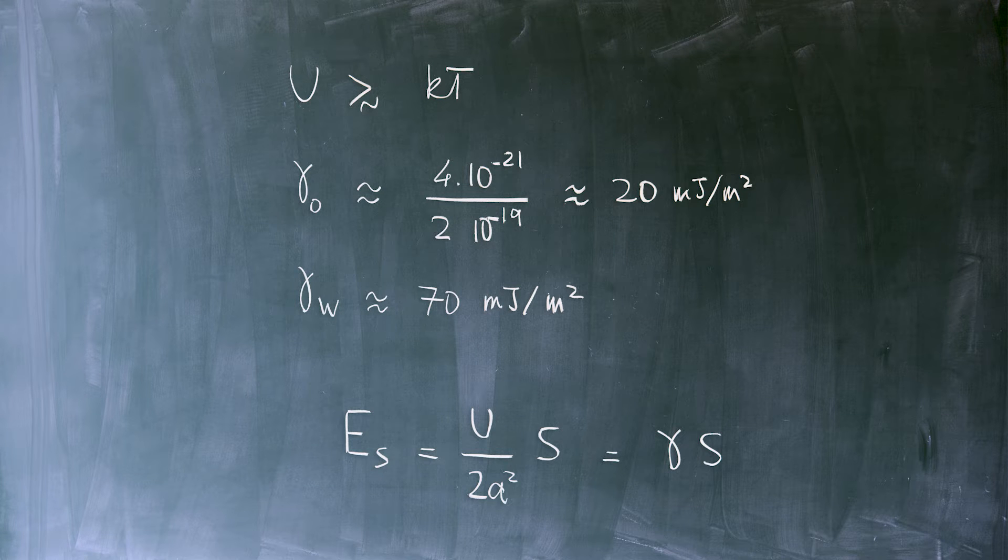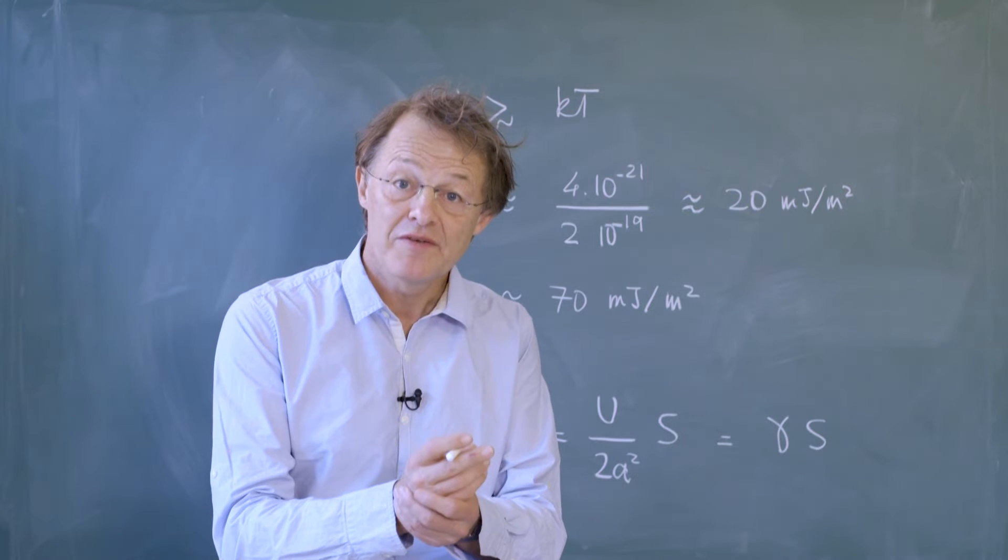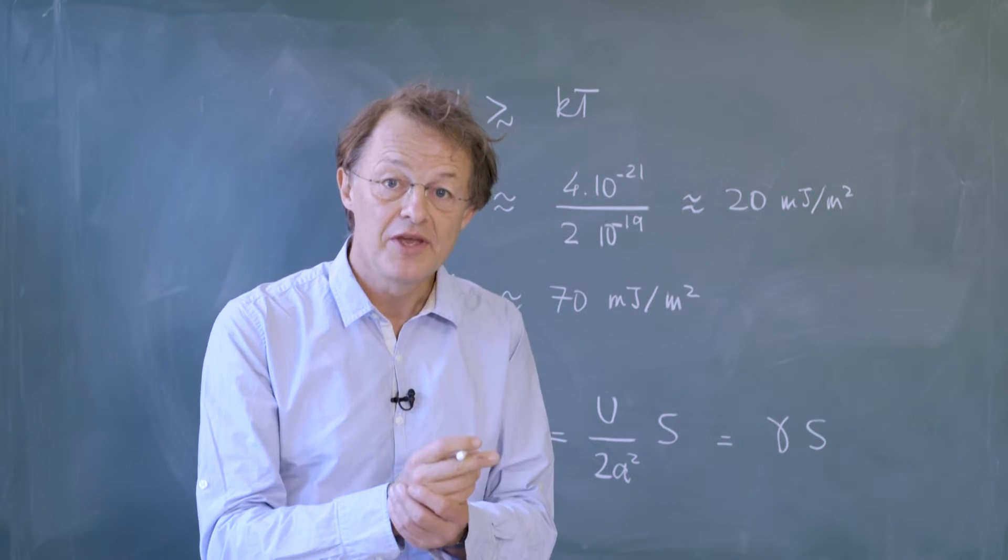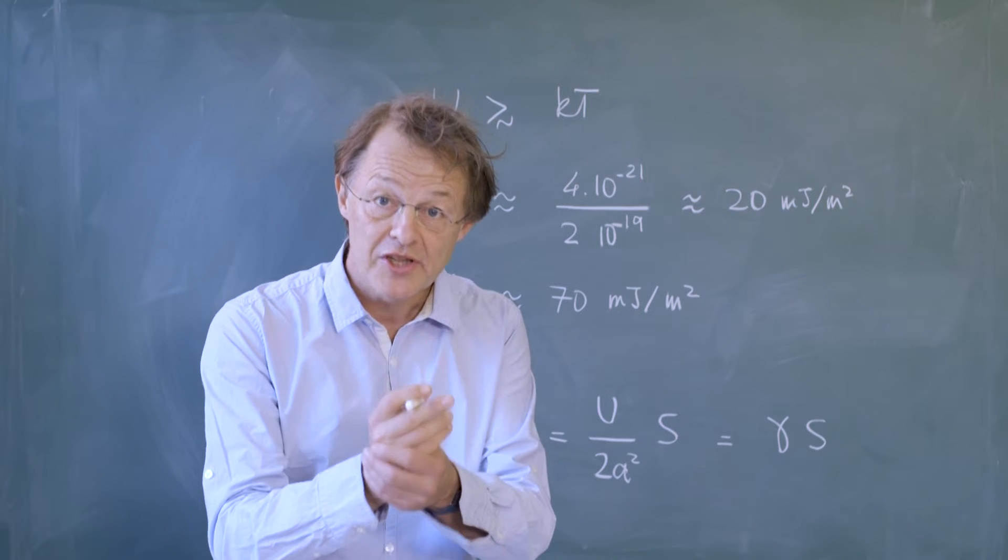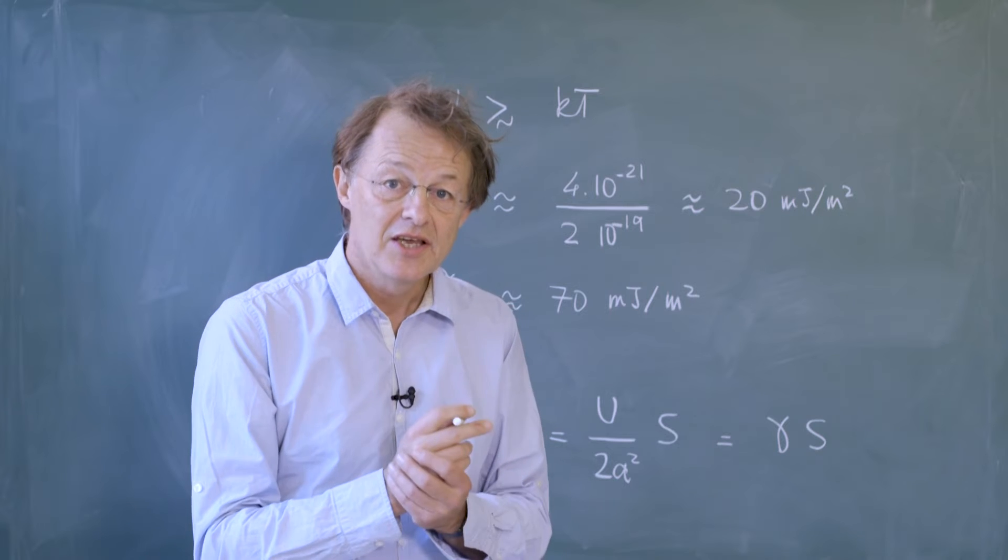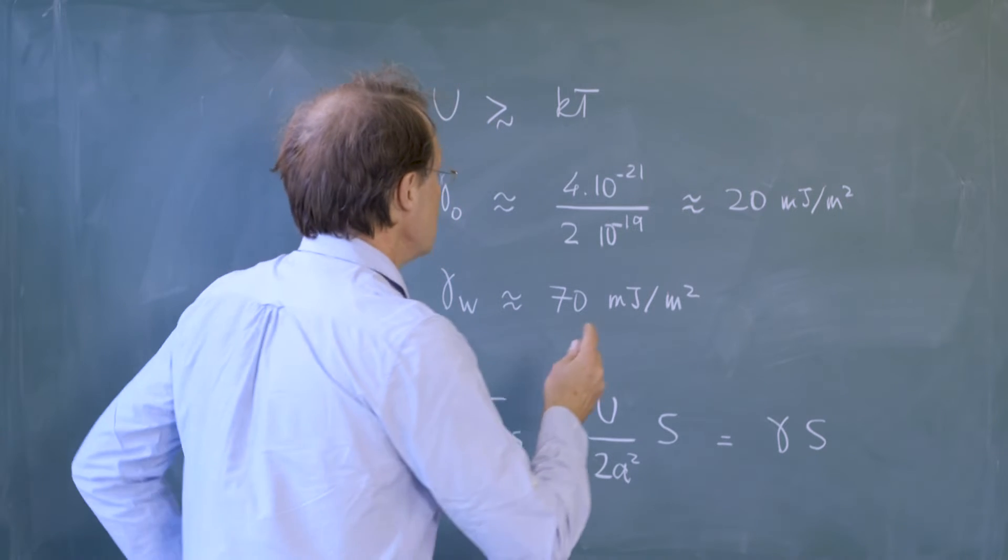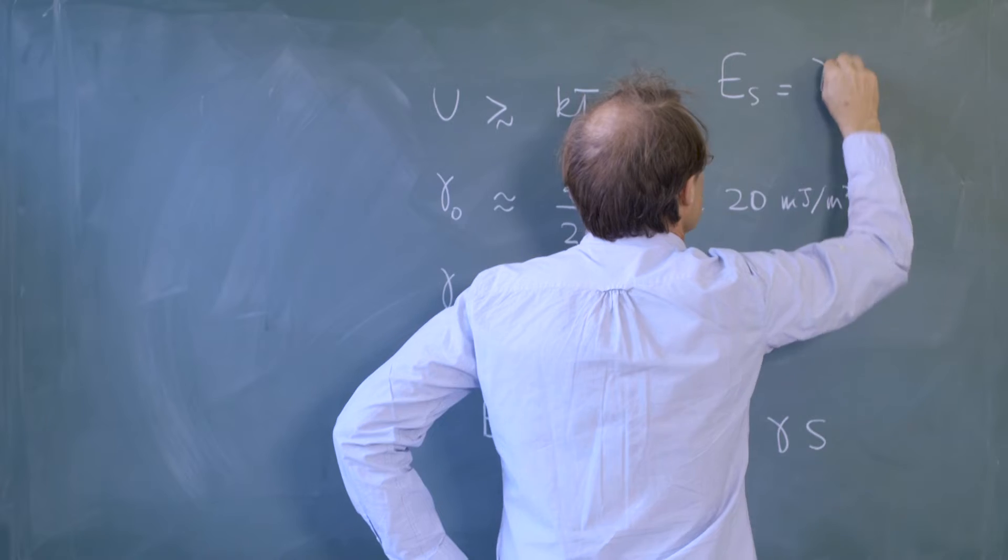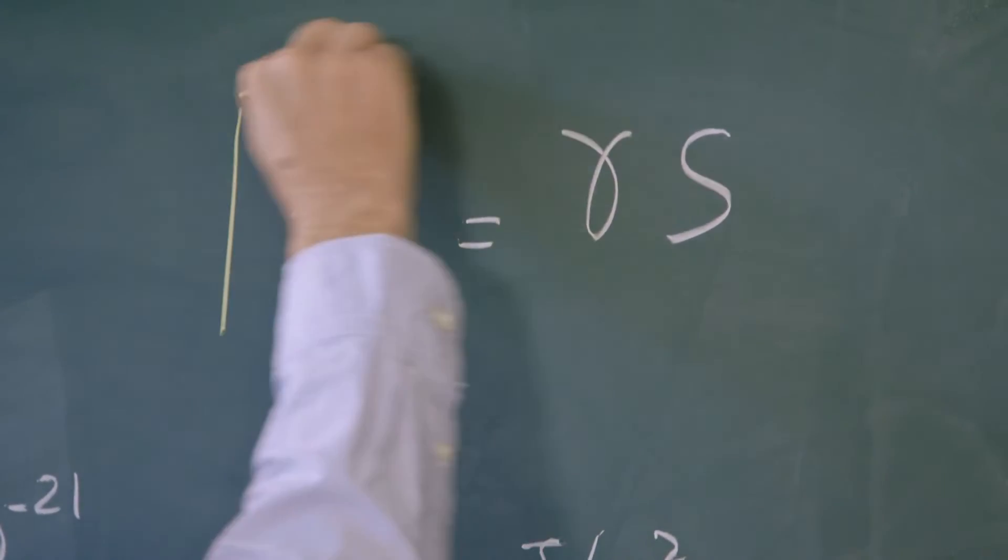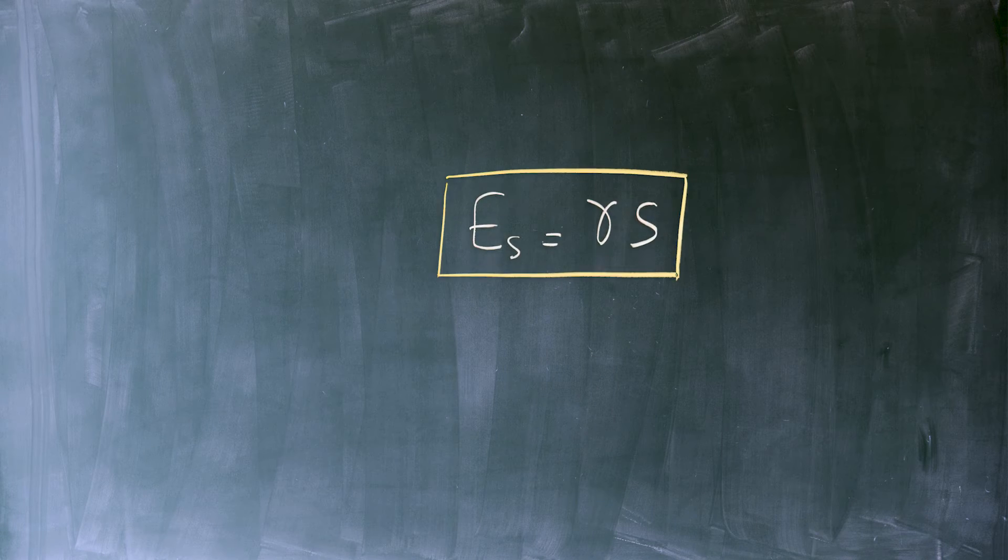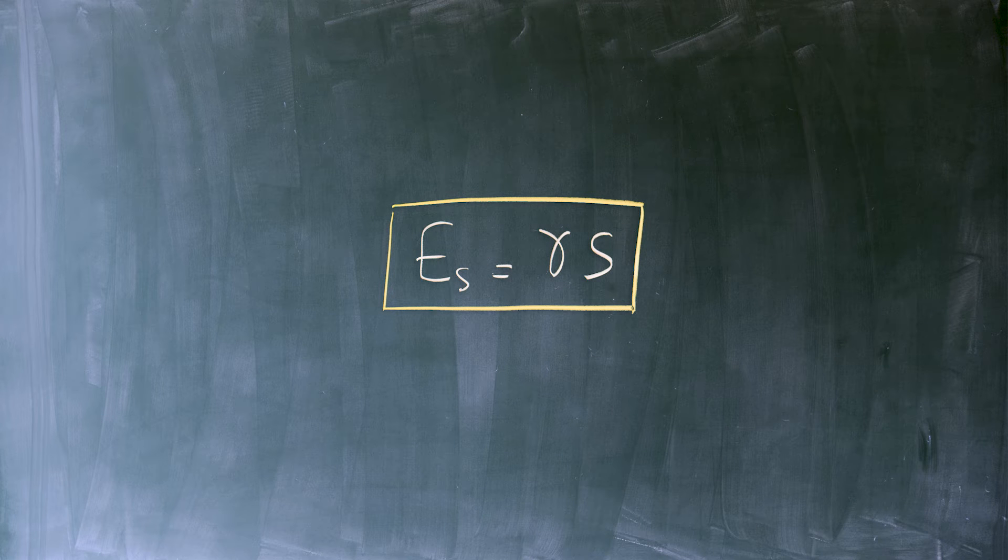Well, in summary, what we have to remember is the fact that each time we have an interface between liquid and air, between two liquids, between a solid and a fluid, we have a special energy which is attached to this interface. And this energy can be generically written surface area times surface tension. And this is our main formula for all the lessons which are going to come.